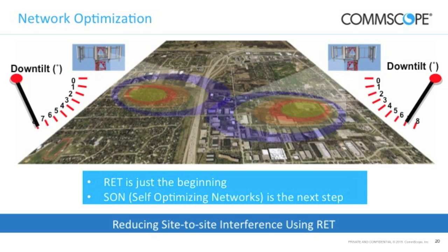RET — Remote Electrical Tilt — is good, and it's just the beginning for minimizing cell overlap. SON — Self-Organizing Network — is the next step. SON is based on measurements compared to key performance indicators. If KPIs like throughput or quality levels are violated, an algorithm calculates what needs to be done to fix it, and specific steps can automatically be implemented — changing power, changing tilt, and other aspects. Some systems give recommendations to planners; others automatically implement changes. SON is coming and it helps react to dynamic traffic patterns.